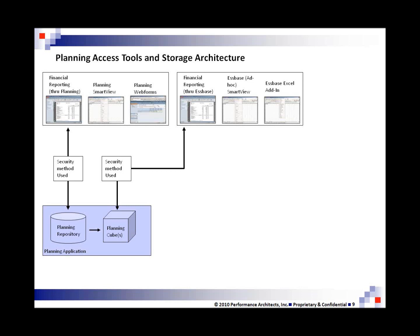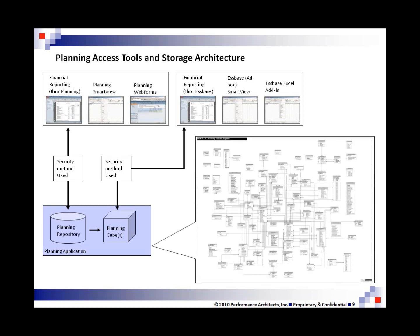This diagram clearly depicts that there's security stored in both places, and there's a little arrow between the database and the cube — that's the refresh synchronization process. Here's a sneak peek at the planning repository, where some of the security for financial reporting, planning, and the planning web form lives for that connection on the left. We're showing it now because some of the solutions we discuss down the line leverage the repository, and there's rich information inside that can be leveraged.